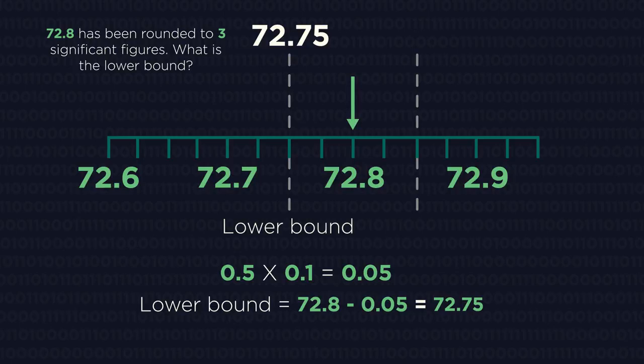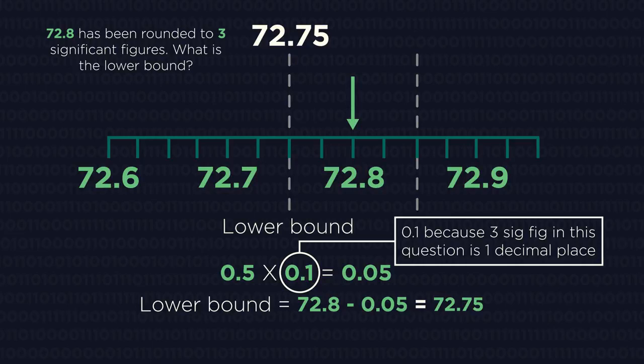For this question, 3 sig figs means we've rounded to 1 decimal place. So the degree of accuracy is 0.1. Half of 0.1 is 0.05, which we can then subtract.